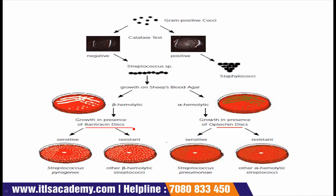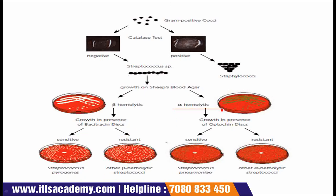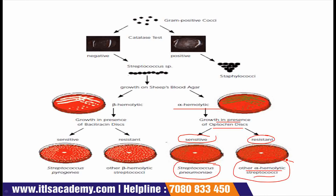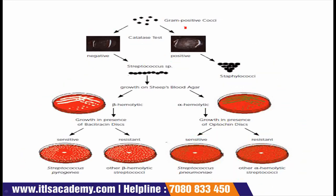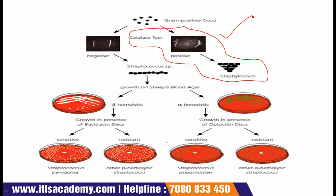If alpha hemolysis is done then growth in presence of optochin disc. In the case of bacitracin disc, if it is sensitive then this will be streptococcus pyogenes, and if it is resistant then it will be other beta hemolytic streptococci. In the case of alpha hemolysis with optochin disc, if it is sensitive then it will be streptococcus pneumoniae, and if it is resistant then other alpha hemolytic streptococci. If catalase test is positive then this will be staphylococci.